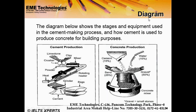The third type is the diagram. If you see a diagram, it can involve one or two stages depending on the content. The diagram shows the equipment used in the cement making process and how cement is used to produce concrete for building purposes. You can divide it into BP1 — cement production — and BP2 — concrete production.